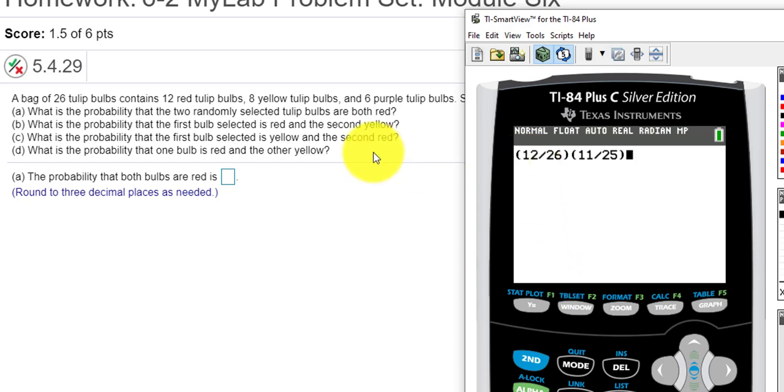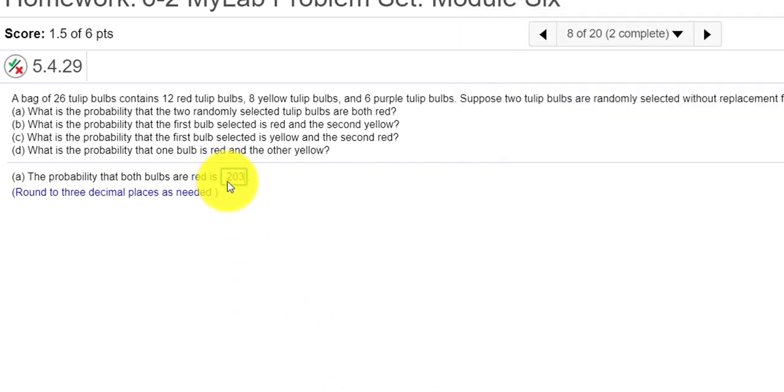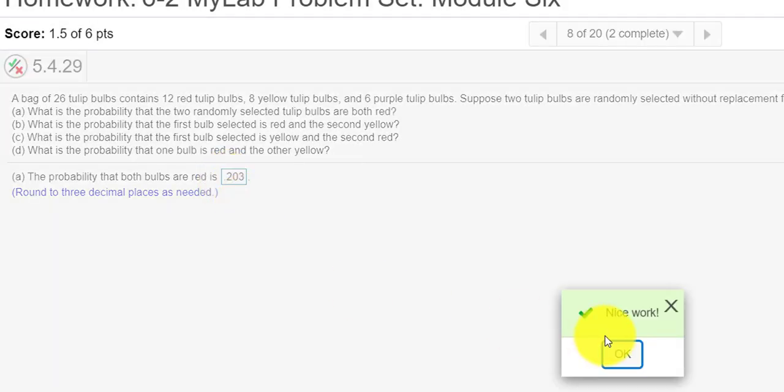So this is the first pick, 12 out of 26 is my probability. And then my second pick, if I've already picked one red, there's only 11 left, and if I made one pick already, there's only 25 total bulbs left. So we get 0.203, check answer, nice work.